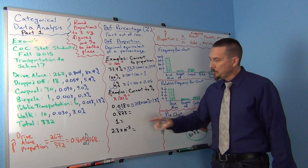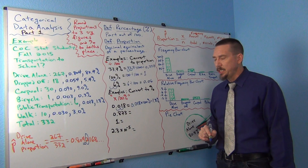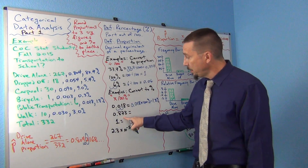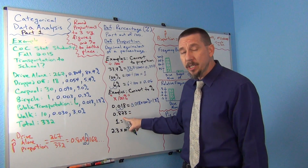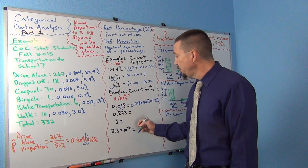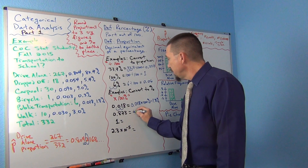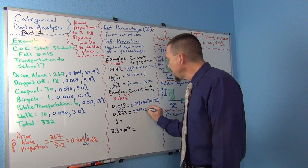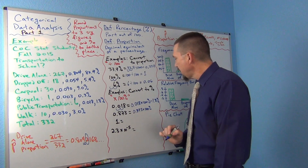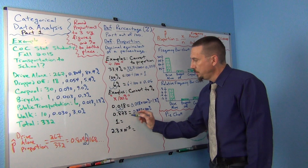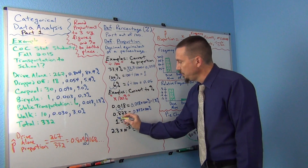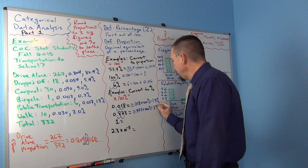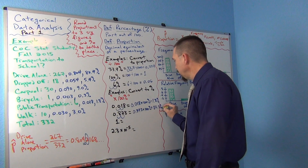How about 0.873? Same thing — multiply by 100 or move the decimal two places to the right. 0.873 times 100, stick on the percent sign, which moves the decimal two places to the right, and you get 87.3%.